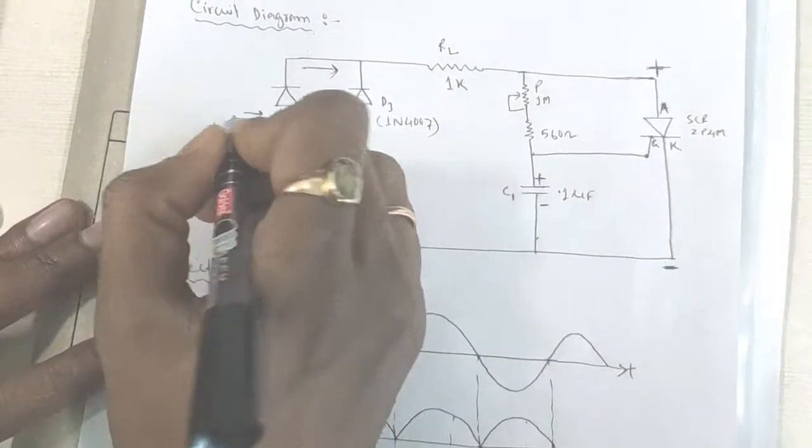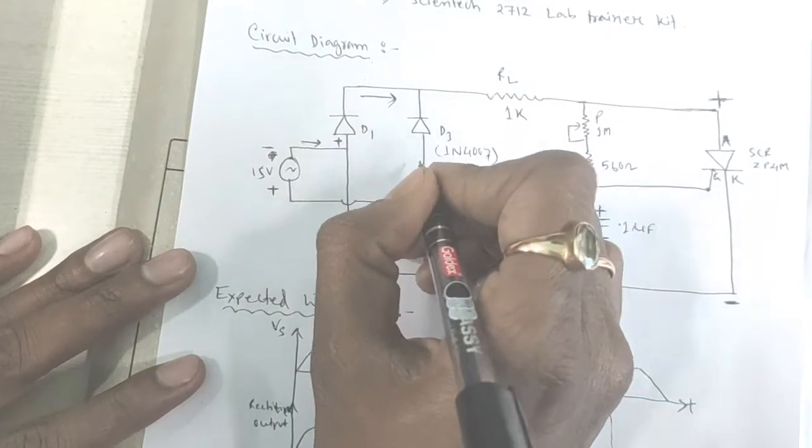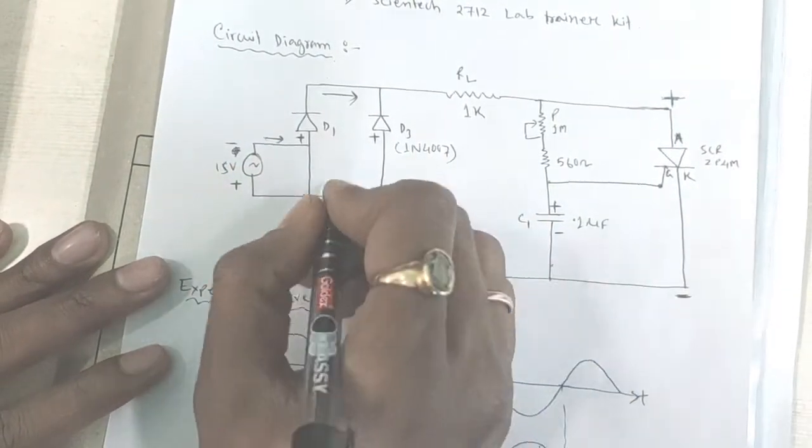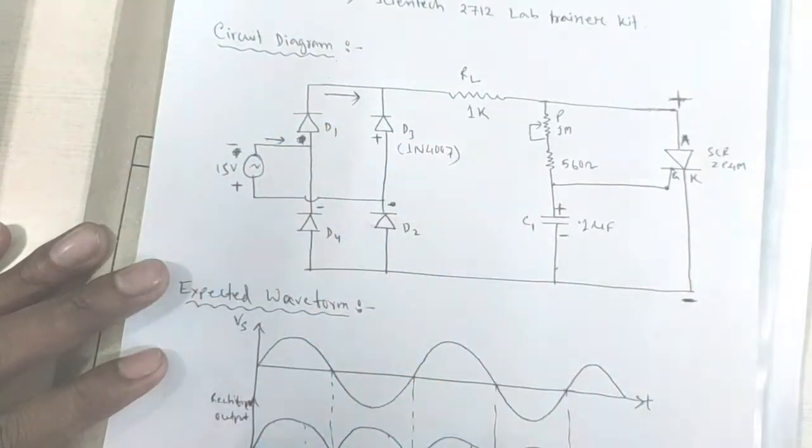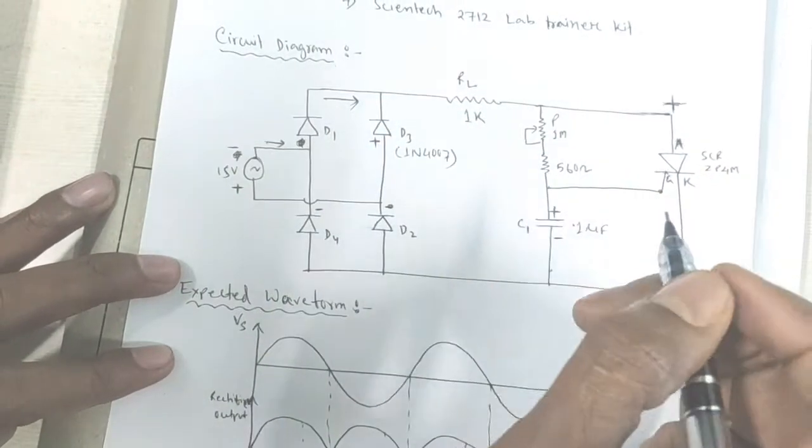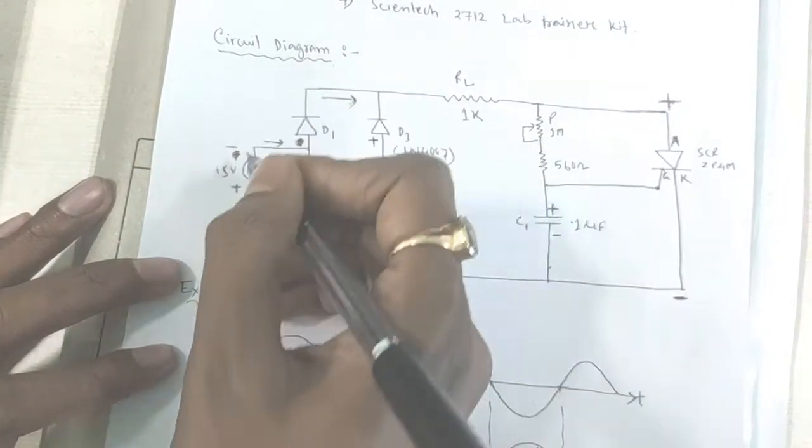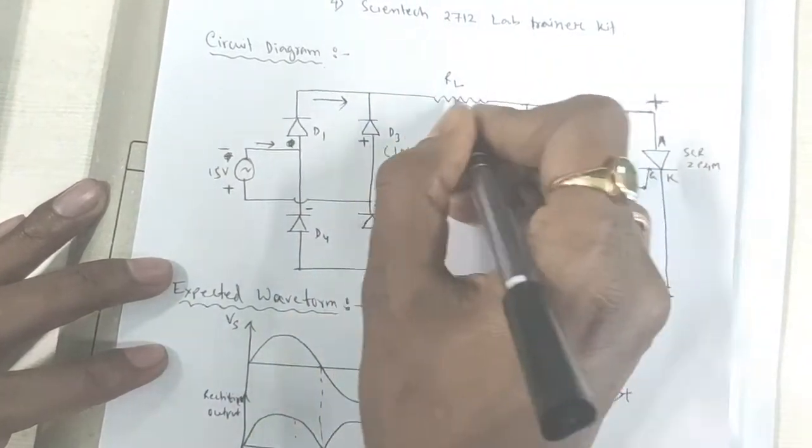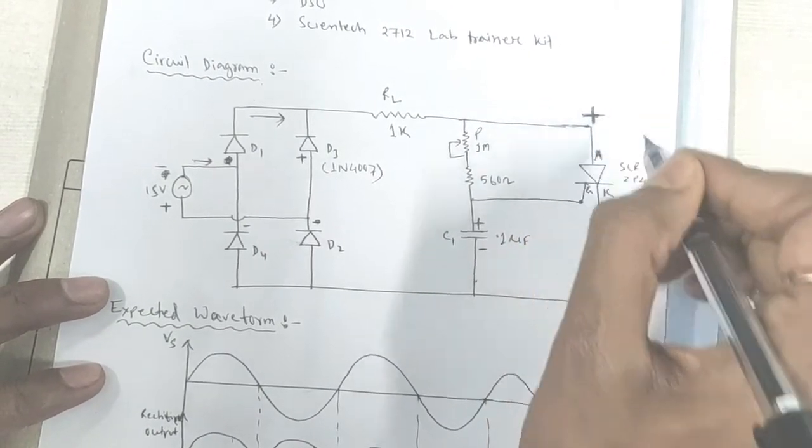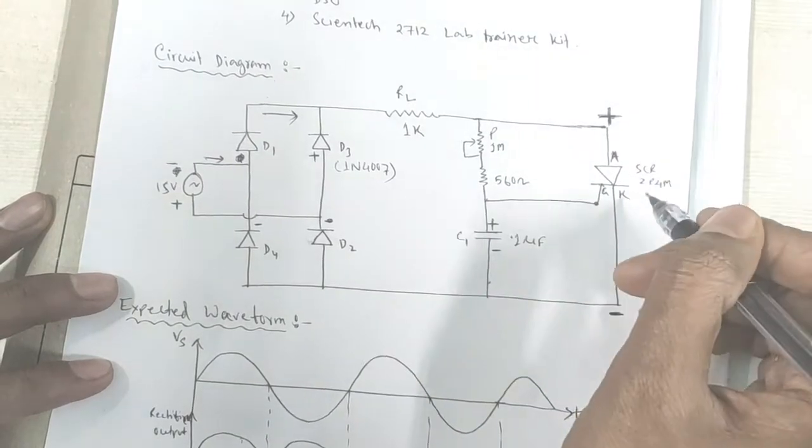Now, for the negative half cycle, this will become negative and this will become positive. Then a positive voltage will appear at D3 and negative voltage will appear at D4. Then also, it will act as a forward bias. Again, same cycle repeated. Current will flow through this direction and passes to RL resistance. Then there is positive voltage will appear at anode of this SCR and negative voltage will appear at the cathode of this SCR. And current will not pass through this SCR because of this SCR is in forward blocking mode.